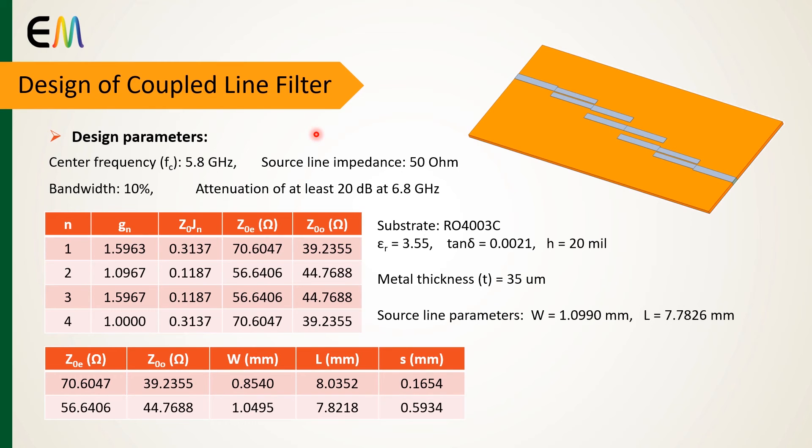In this video, I designed a bandpass filter with center frequency of 5.8 gigahertz, bandwidth of 10 percent, and attenuation of at least 20 decibels at 6.8 gigahertz. These tables show the line parameters such as even and odd mode impedances, widths, lengths, and space between coupled lines.